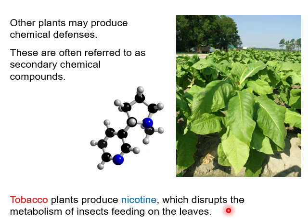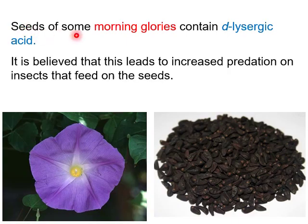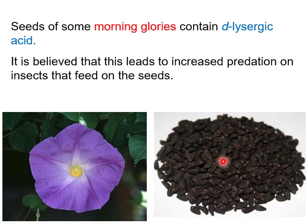Human beings also cause damage to the tobacco plant. When insects feed on it, nicotine disturbs their metabolism. Seeds of some morning glory contain d-lysergic acid. It is believed that this leads to increased predation on insects that feed on the seeds. The morning glory produces d-lysergic acid, causing insects that eat the seeds to become more vulnerable to predation.